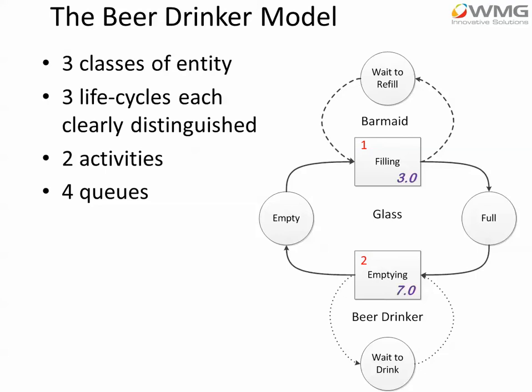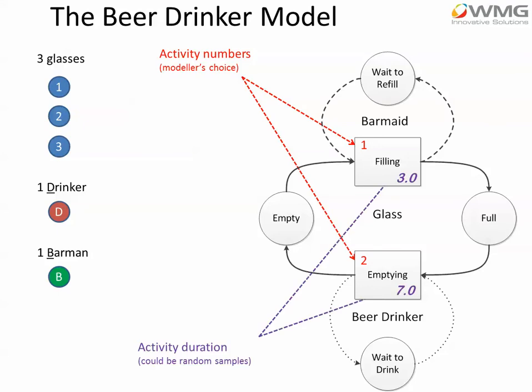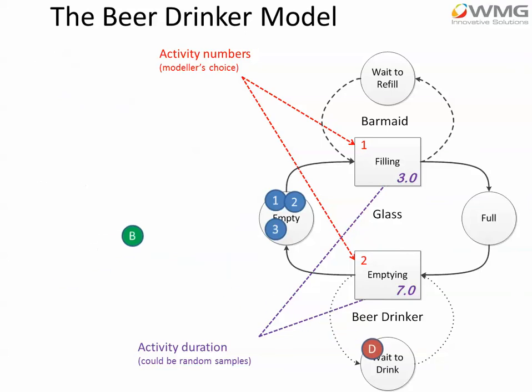We've also got some times — these are the activity durations. They're shown as fixed values for the purpose of this demonstration, but in practice they might be samples from a distribution. So here are our entities and we're going to load them into the model. We'll put our three glasses into the empty queue and likewise into the waiting to drink and waiting to refill queues. It's normal when we start a simulation at time zero to have the entities in waiting states rather than already engaged in any activity.